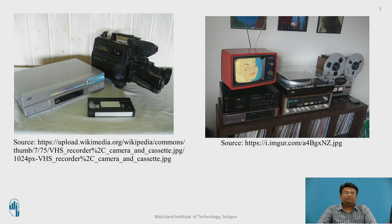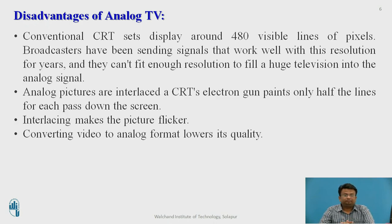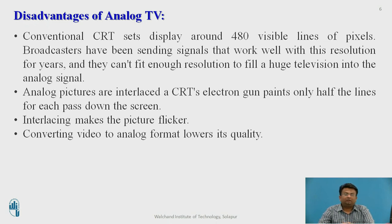The picture illustrates examples of analog television sets. What are the disadvantages of analog television? The conventional CRT set displays around only 480 visible lines of pixels, so broadcasters face difficulty with large television sets displaying the signal. Because of the limited 480 lines, on larger displays the video will be blurry. Also, analog pictures are interlaced by the CRT electron beam, so interlaced scanning makes the picture flicker.